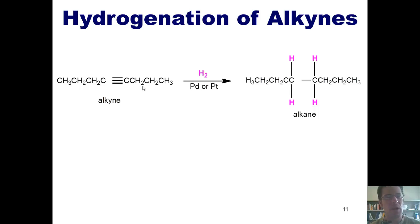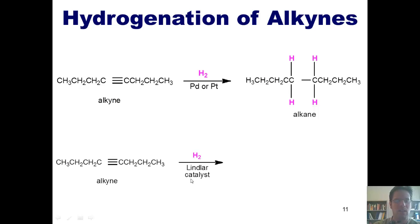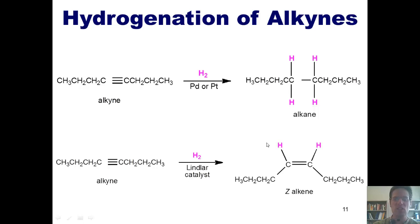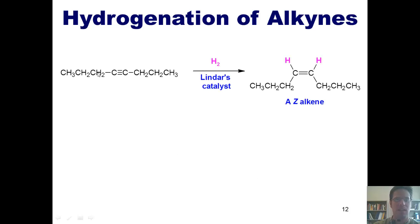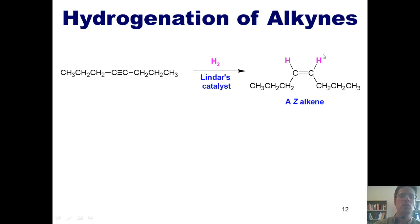What if I want to stop at the alkene? If you take an alkyne and treat it with hydrogen gas and a special catalyst called Lindlar's catalyst — a less reactive form of palladium — it will add the two hydrogens cis to each other and stop at the alkene, giving you a Z alkene. So Lindlar's catalyst converts an alkyne to a Z alkene by adding H2 cis across the carbon-carbon triple bond.